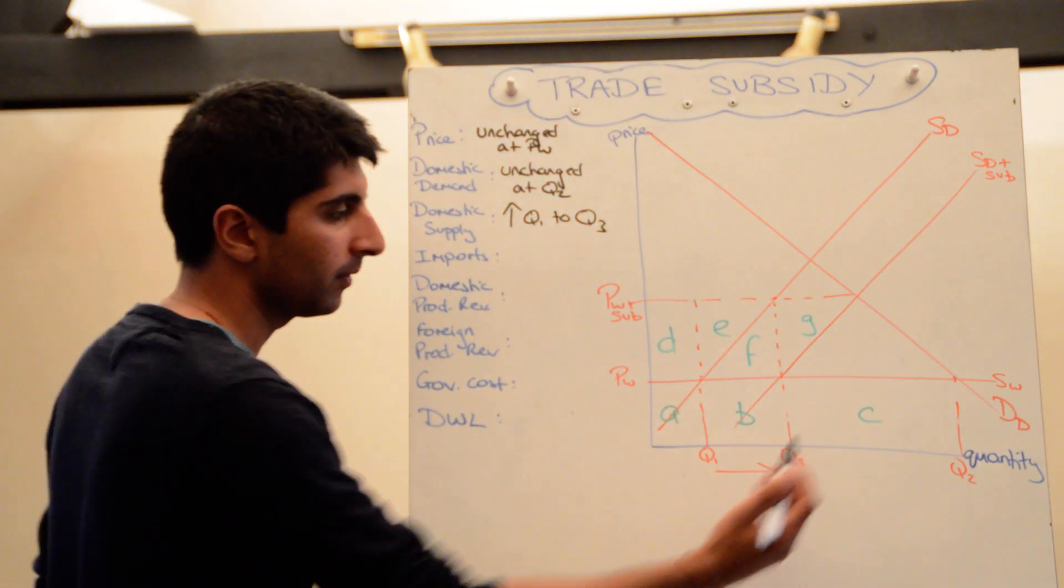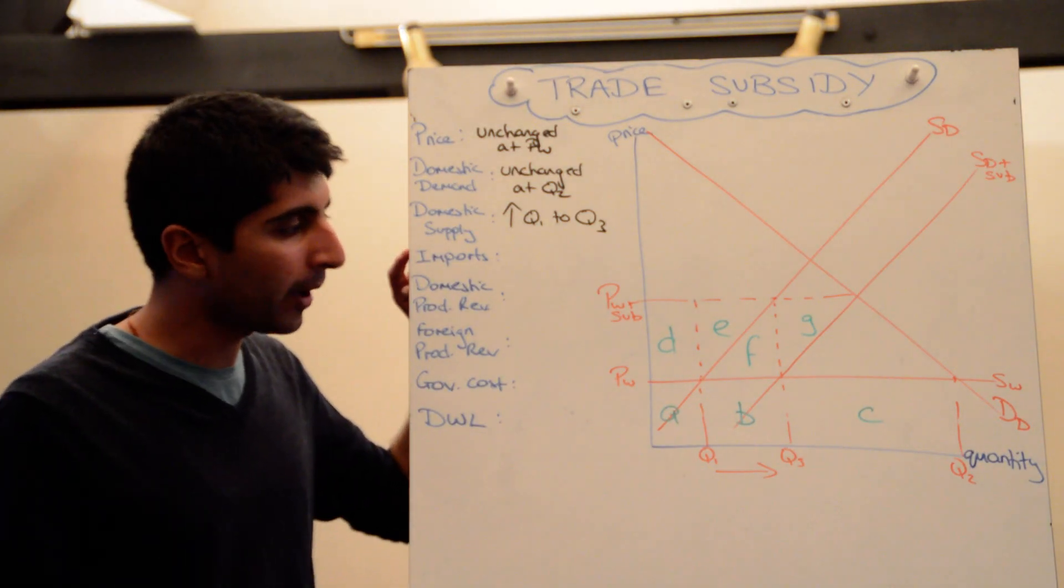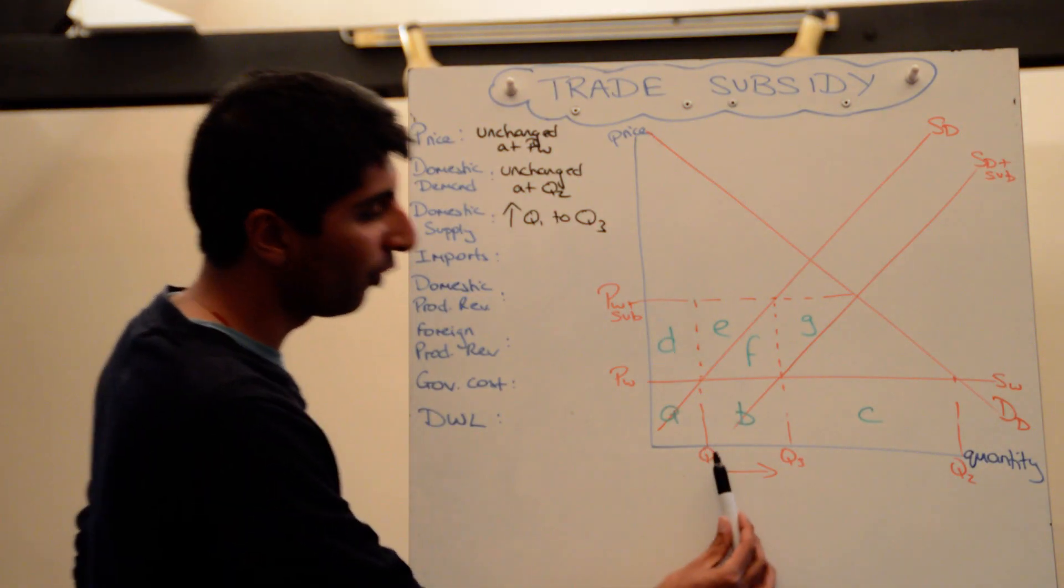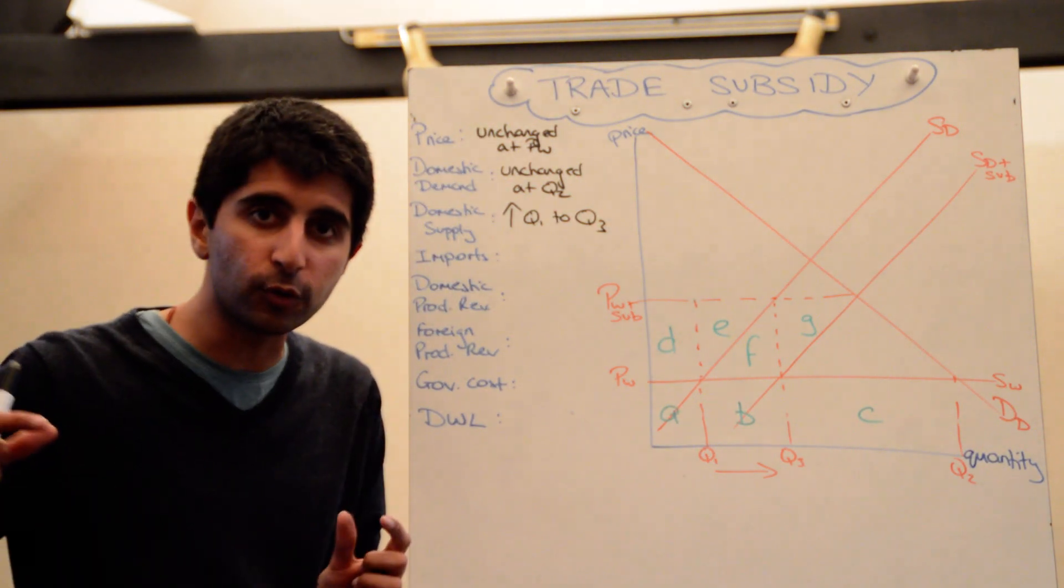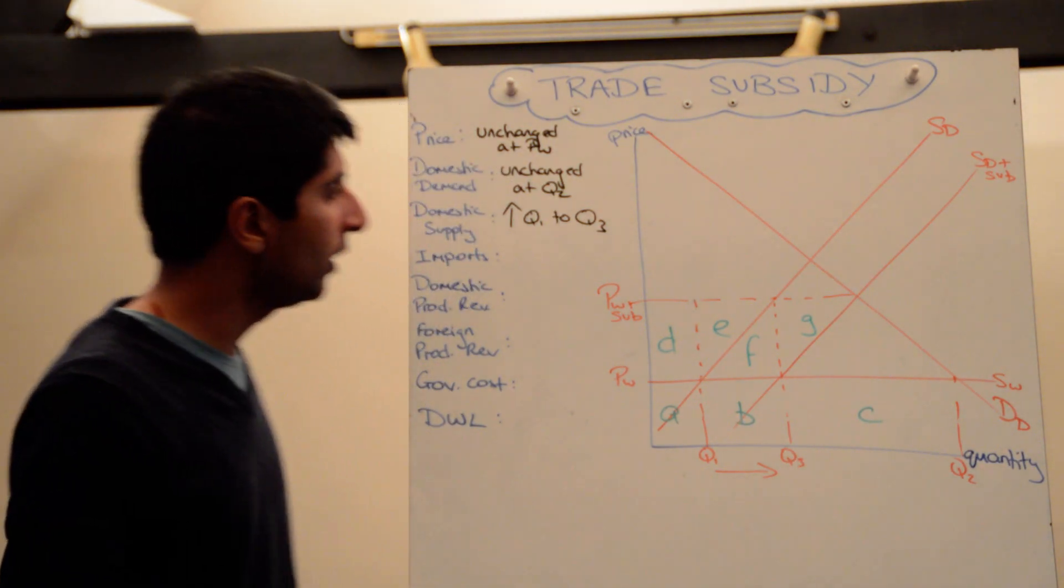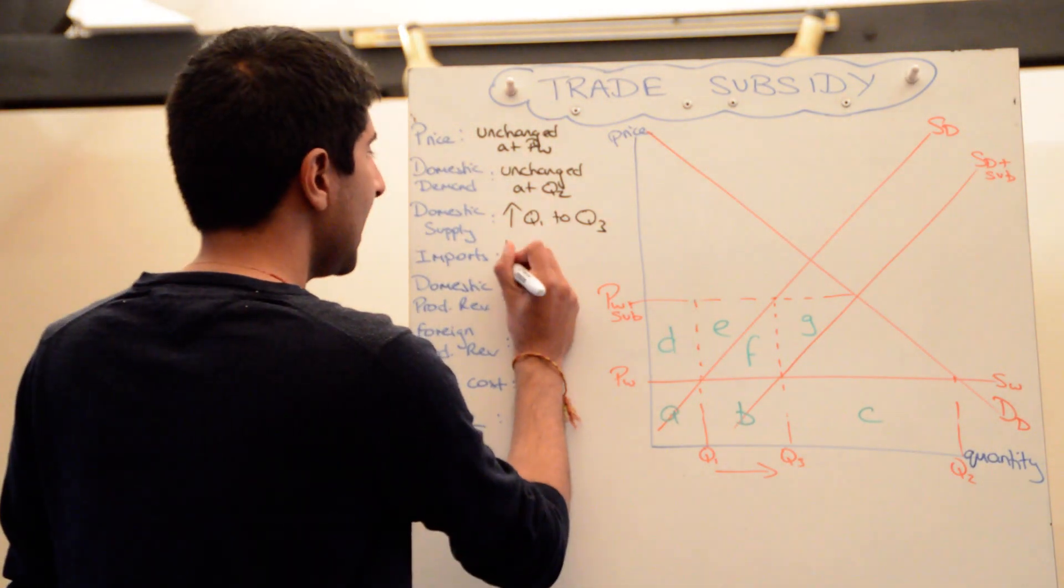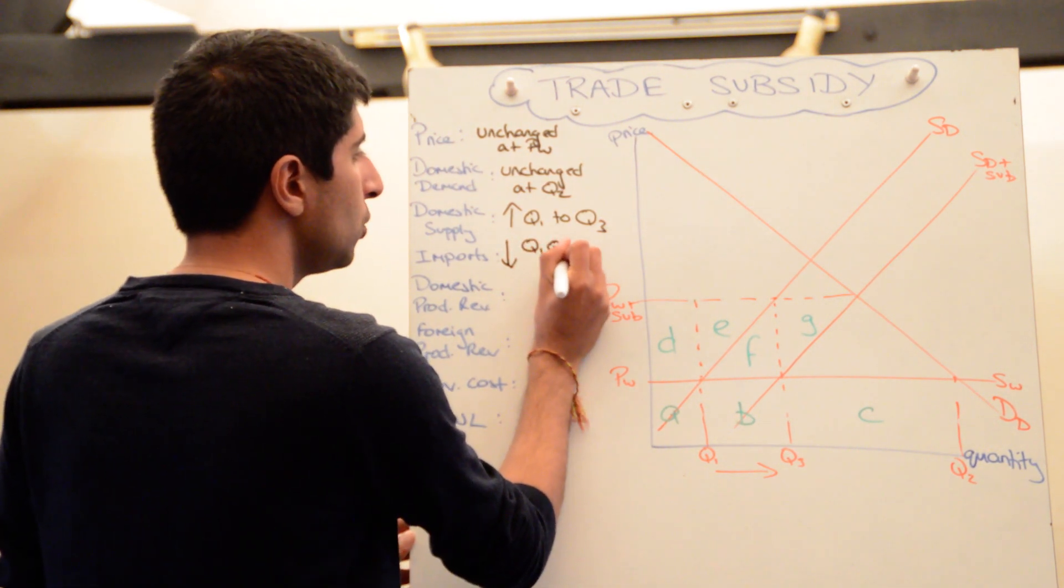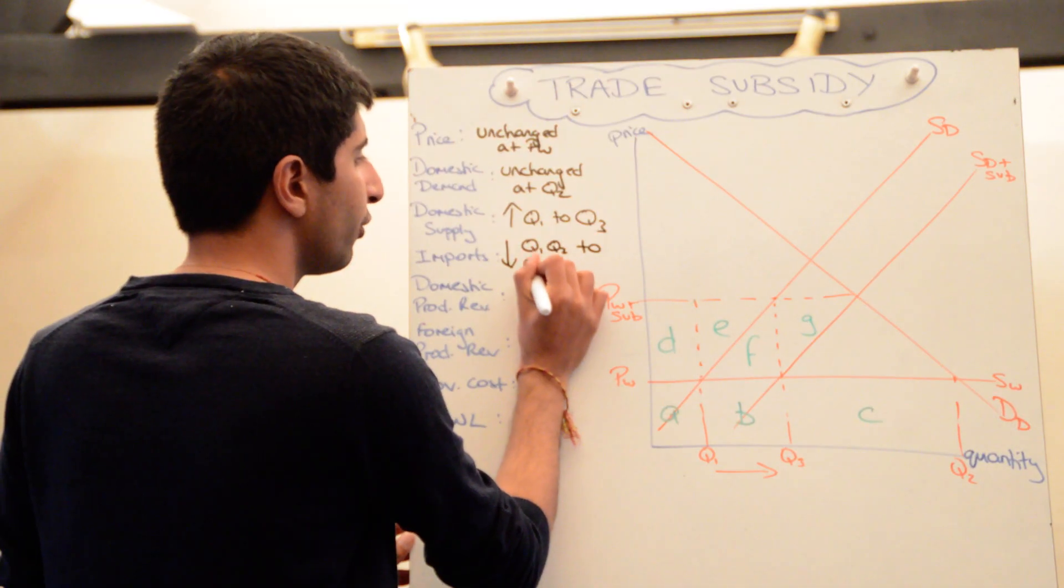That's a good thing for domestic suppliers. What about the level of imports? The quantity of imports have actually fallen. Before it was q1 q2, the difference was being imported. Now it's only the difference between q3 and q2. So the quantity of imports coming into this country has decreased from q1 q2 to now q3 q2.